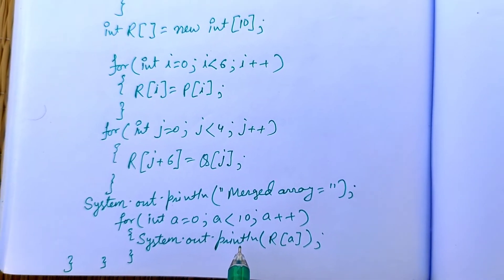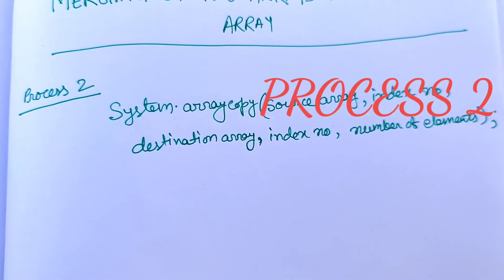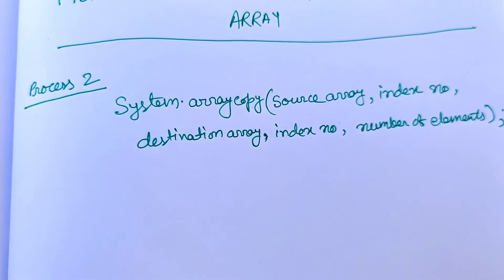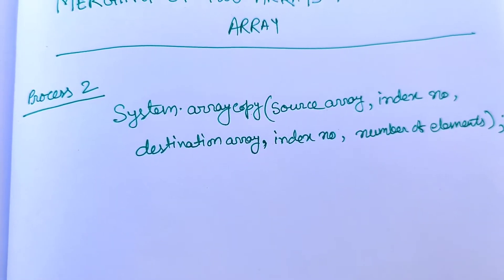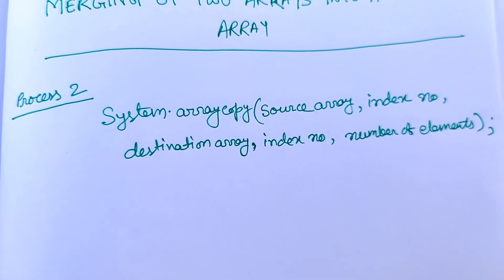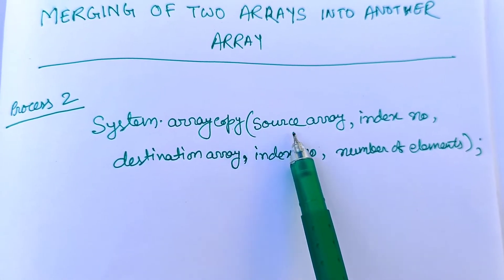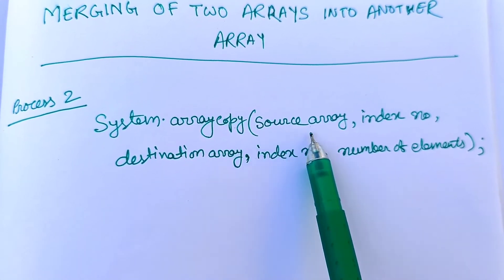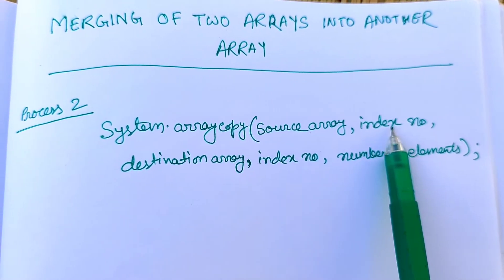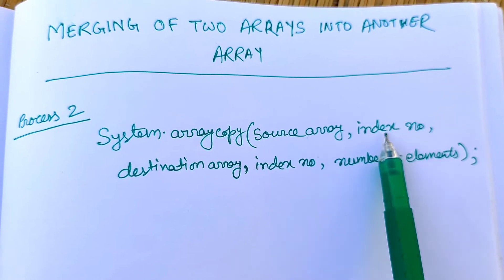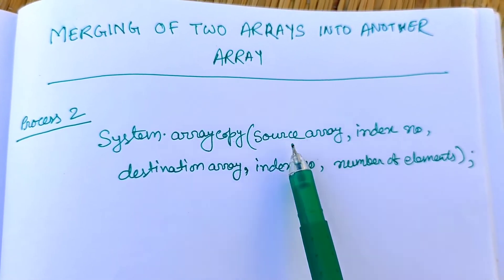For the second process, we use a function called System.arraycopy. This function takes five different parameters: the source array (where the values are present), the index number from where we start copying, and the destination array where we want to store the values.